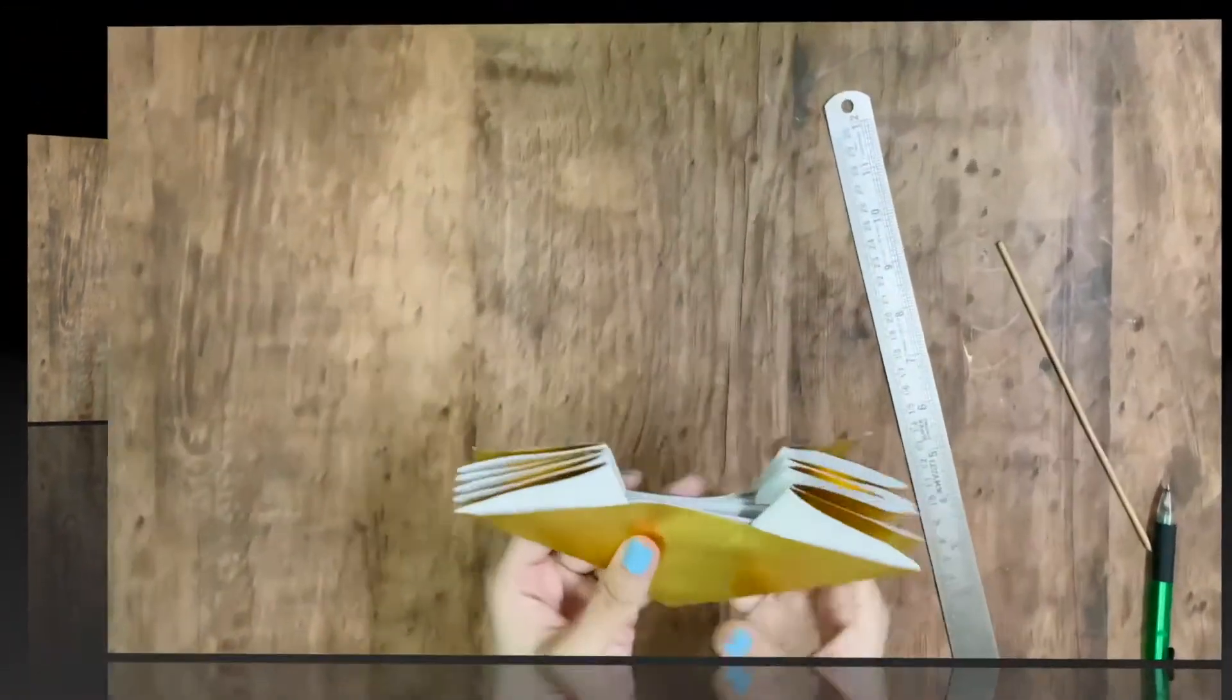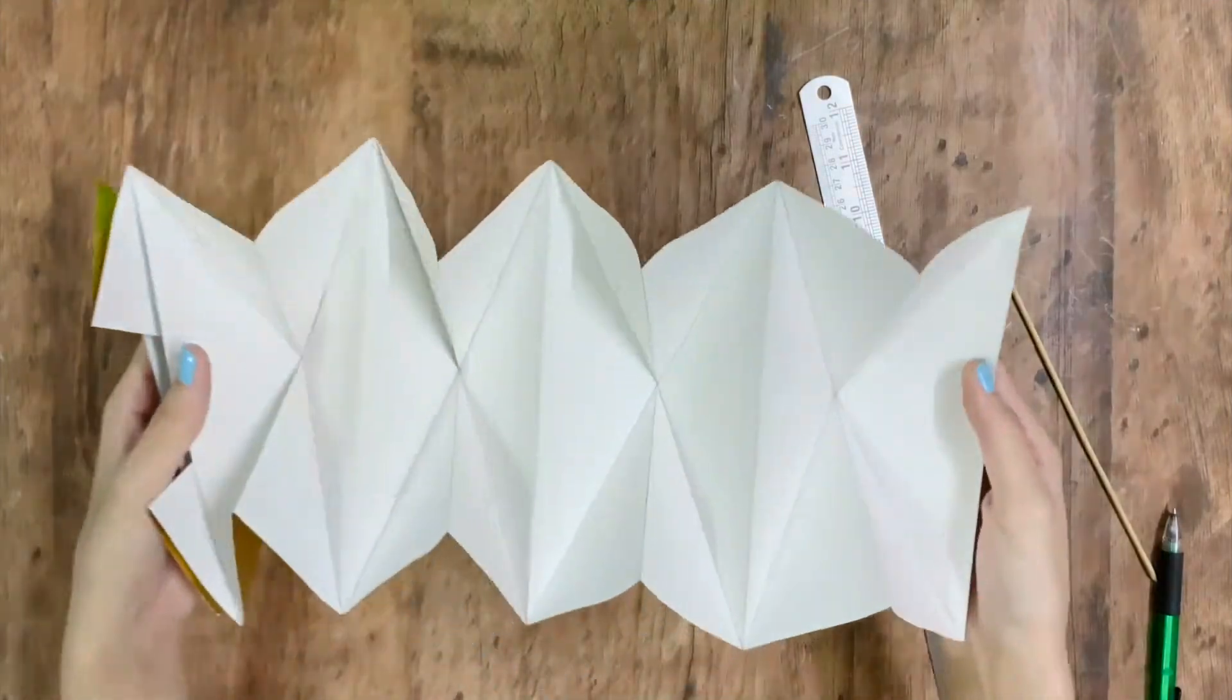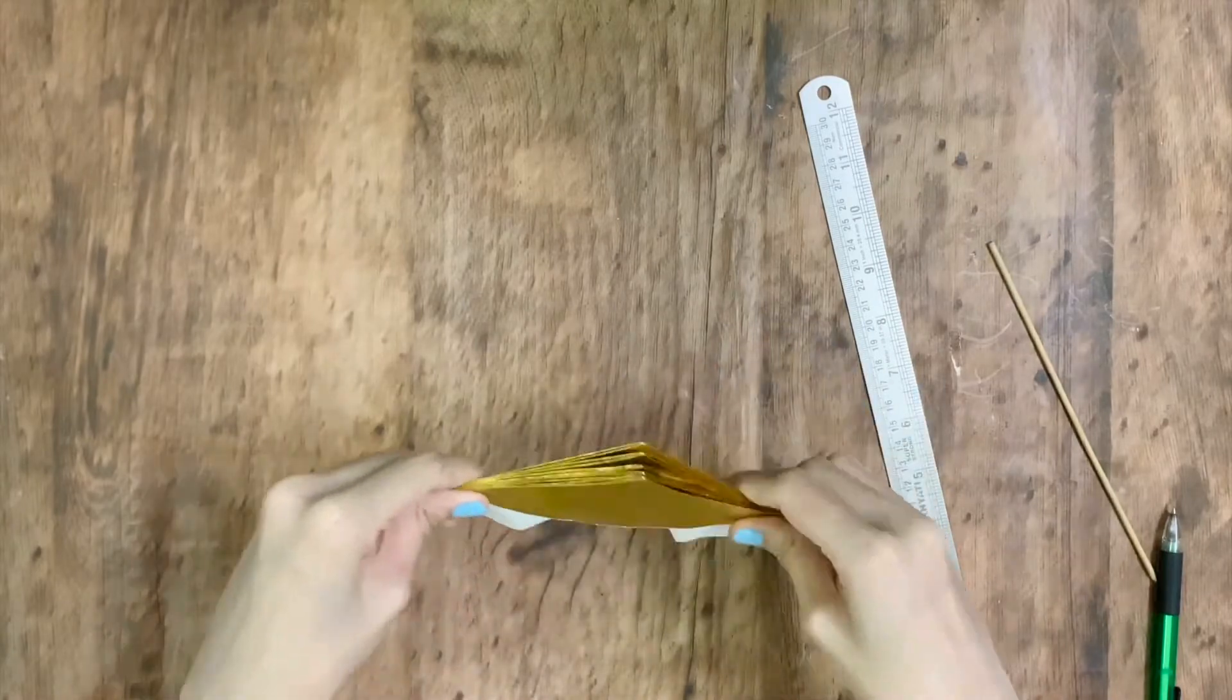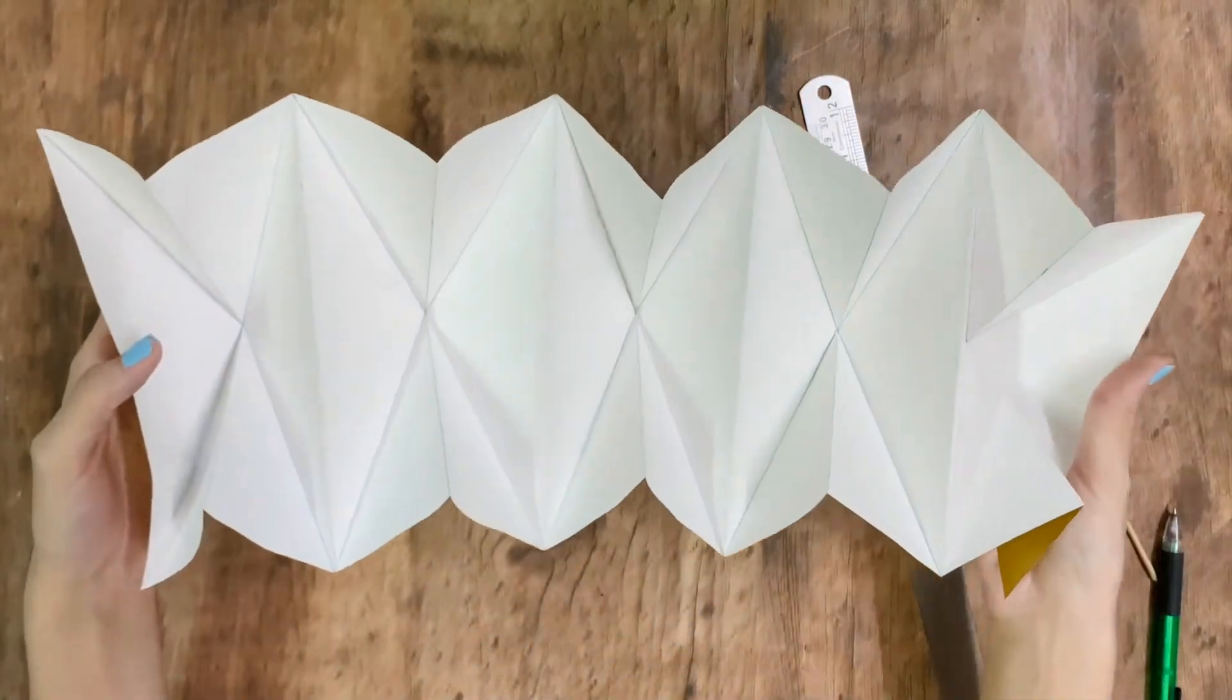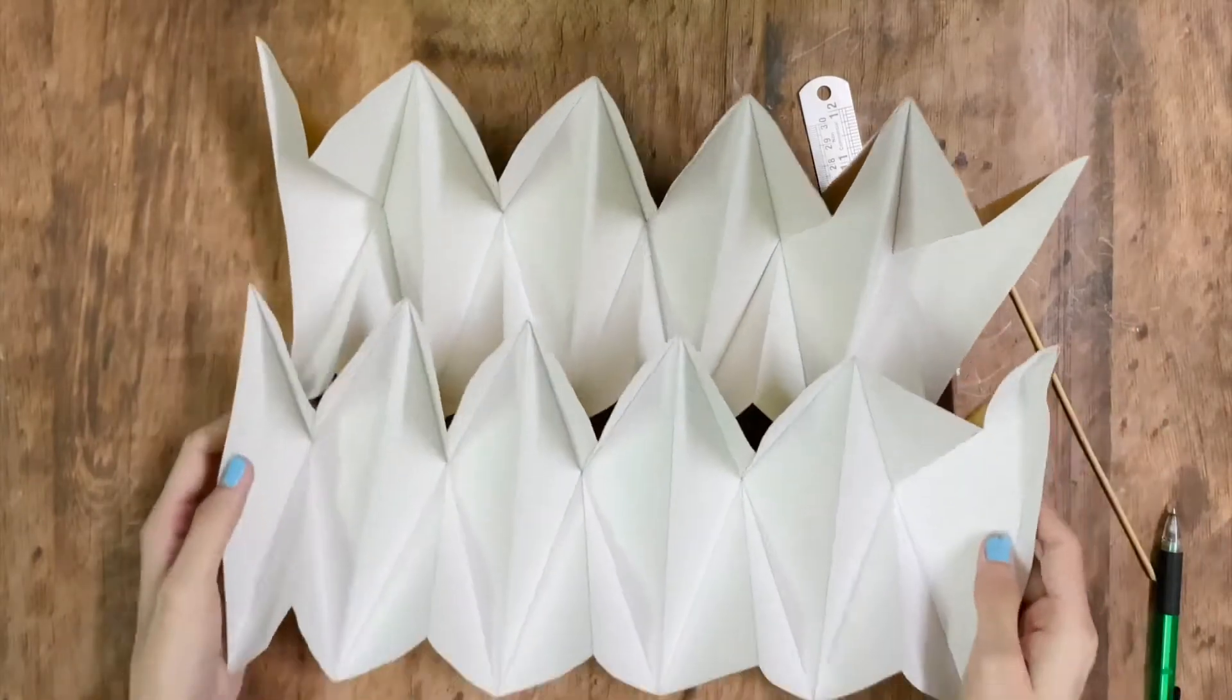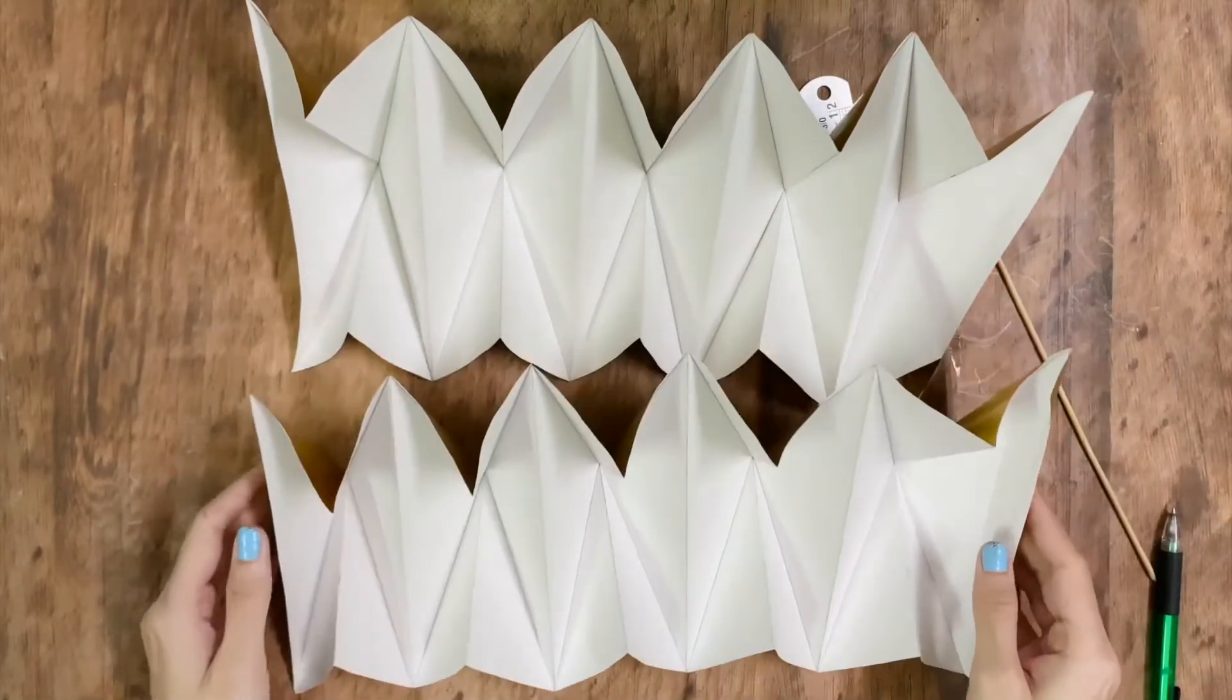Once all your triangles are done, you will see your lamp is coming into shape now. Now one part of my lamp is done. I have already made the second part and kept it ready. Now I'll join both of these together.